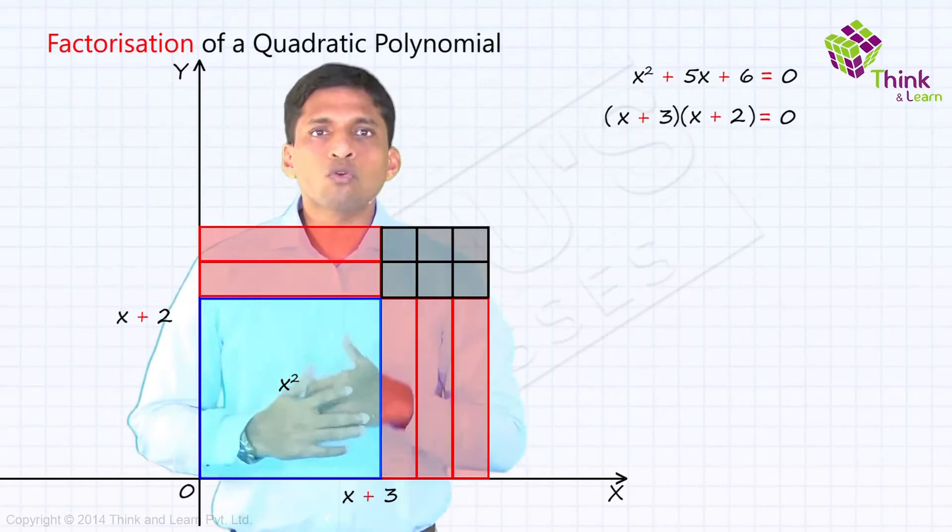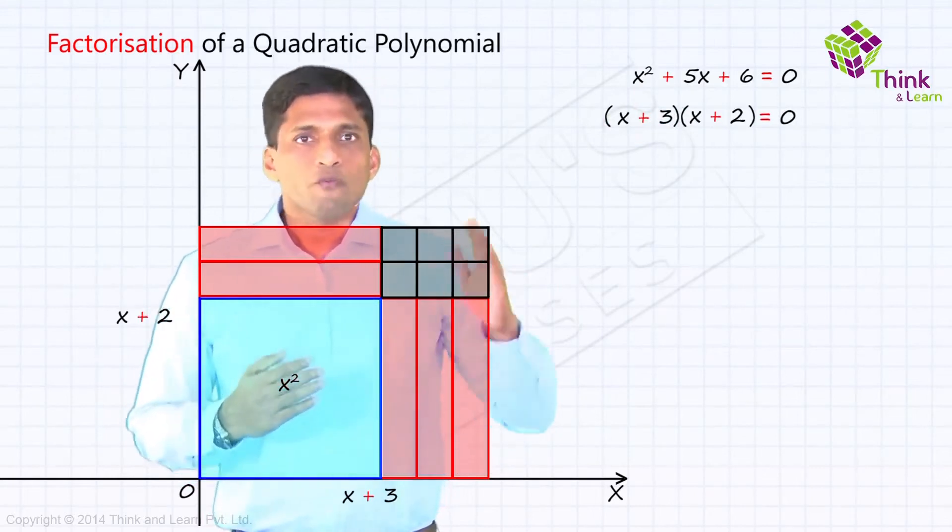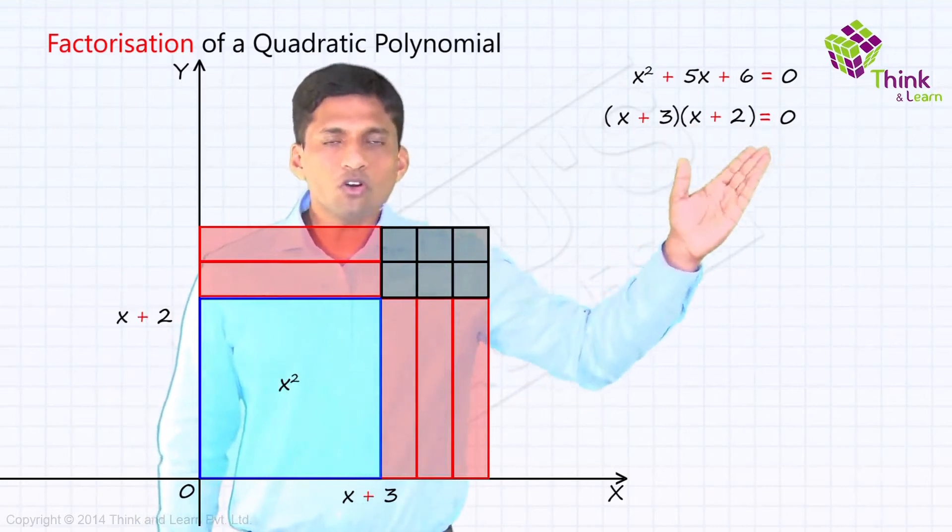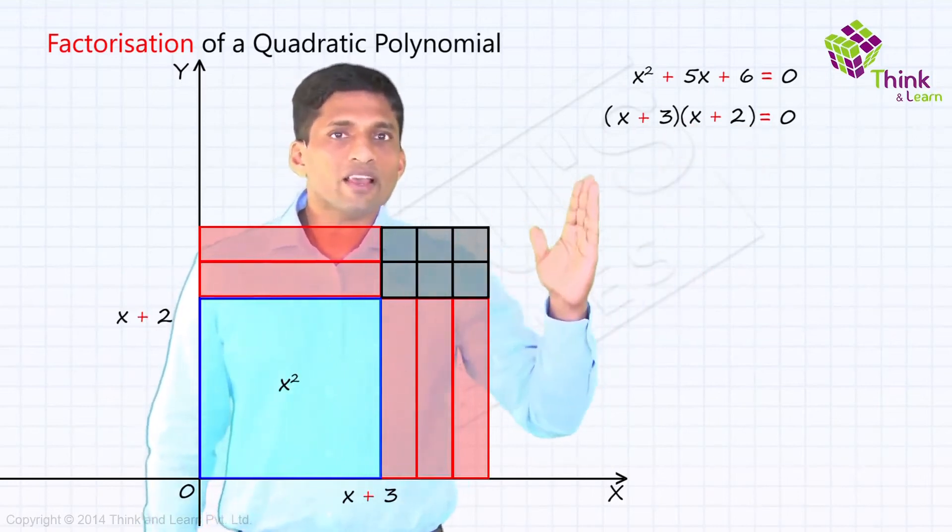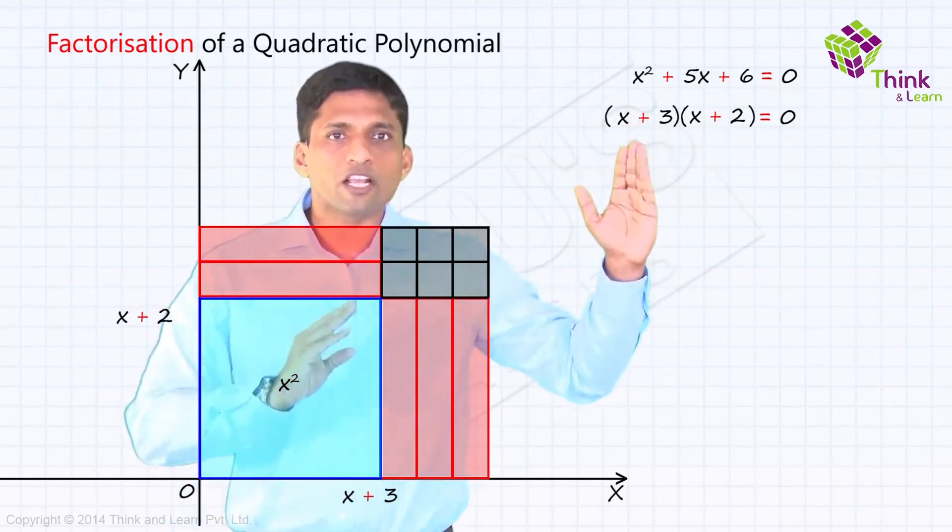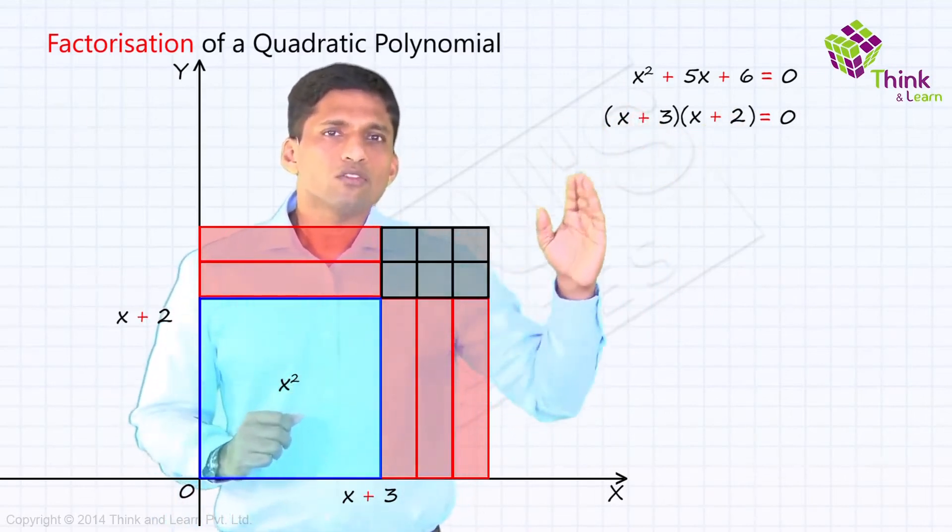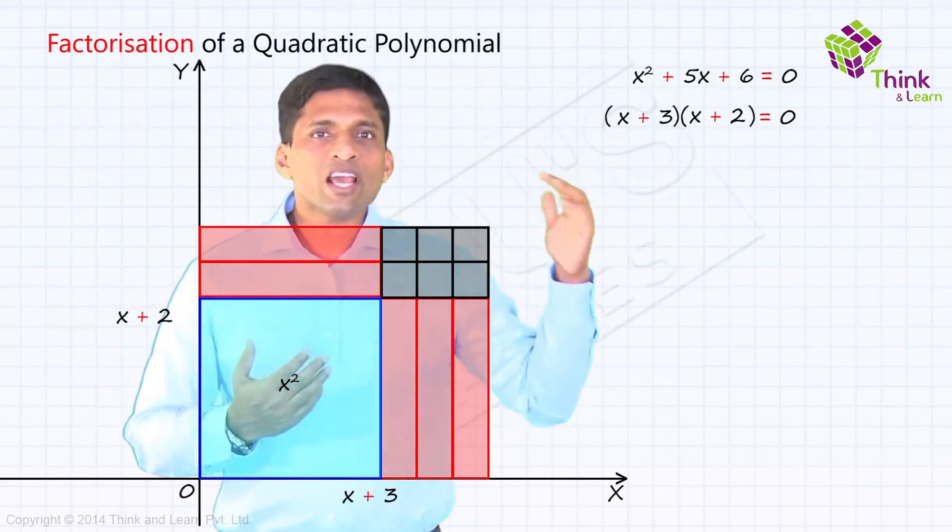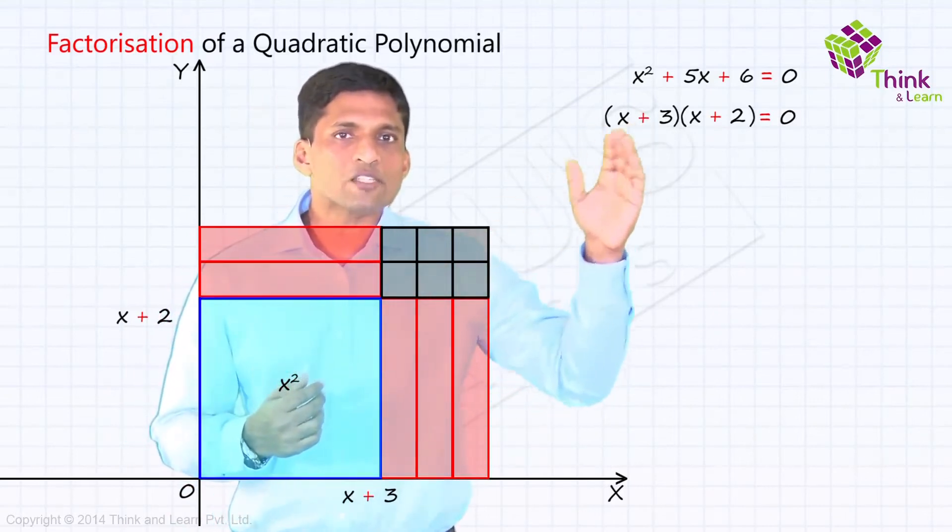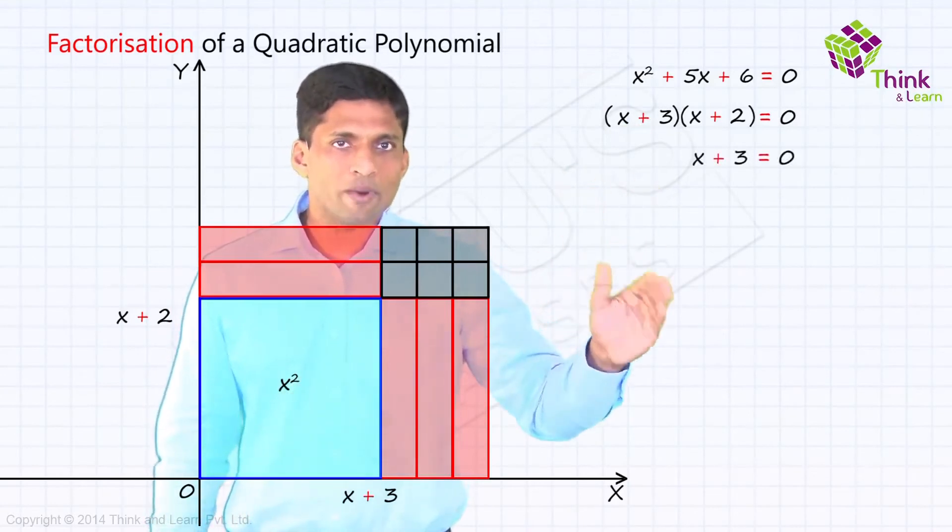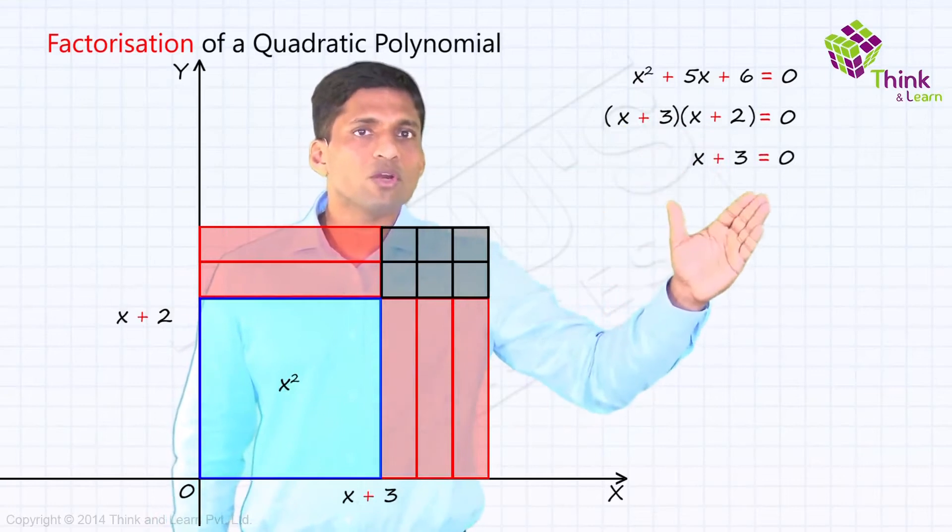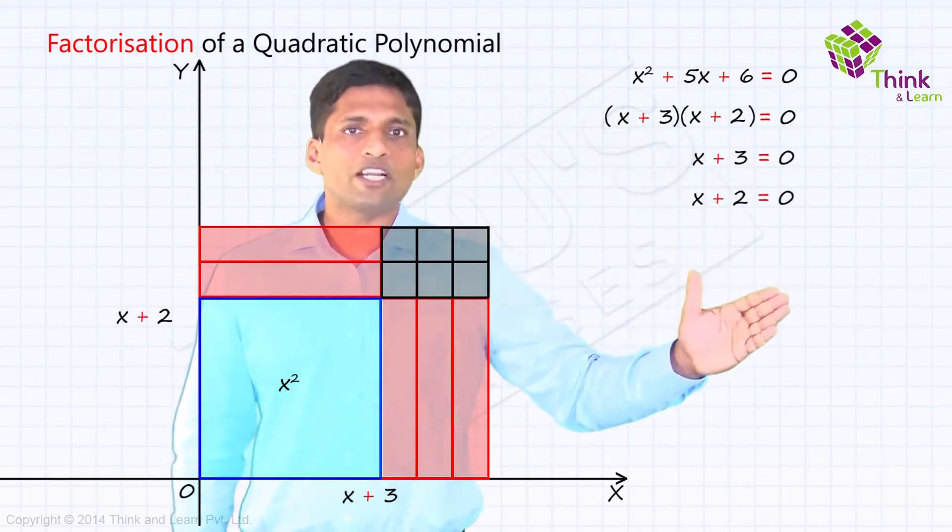Now, we can find the roots of the equation also. We already got x plus 3 into x plus 2 equal to 0. We are visualizing x plus 3 is actually the length and x plus 2 is the breadth of this particular rectangle. So you can make the area of this rectangle 0 either by making length equal to 0, that is x plus 3 equal to 0 or x equal to minus 3, or by breadth equal to 0, which is x plus 2 equal to 0, where x will be equal to minus 2.